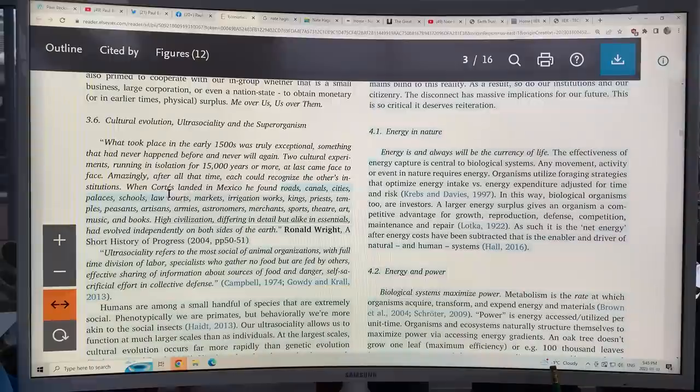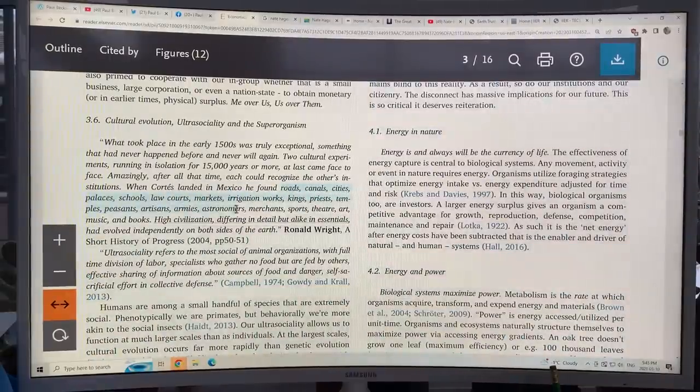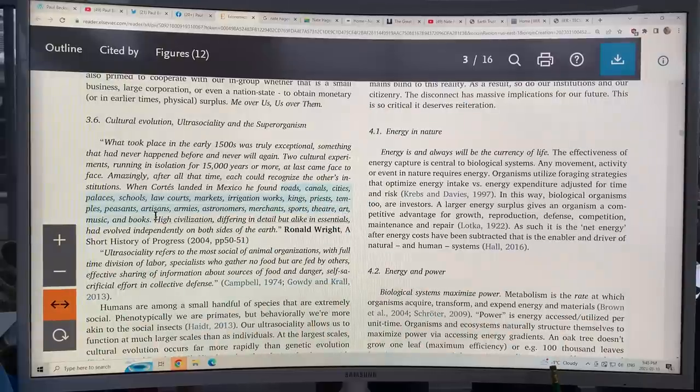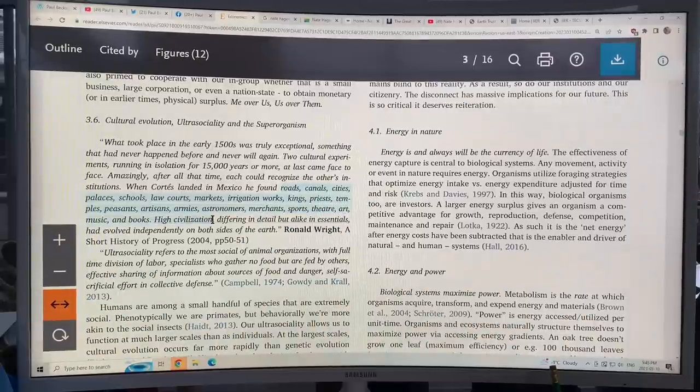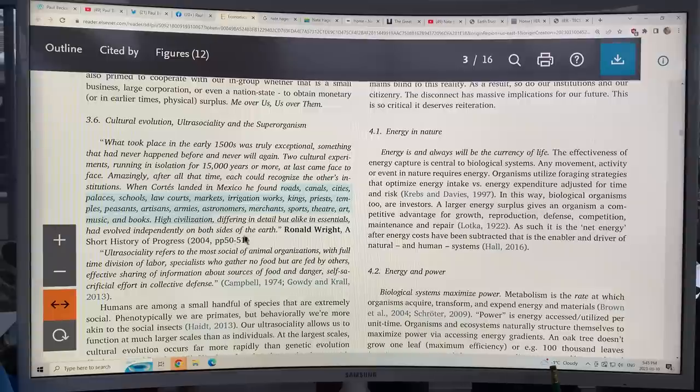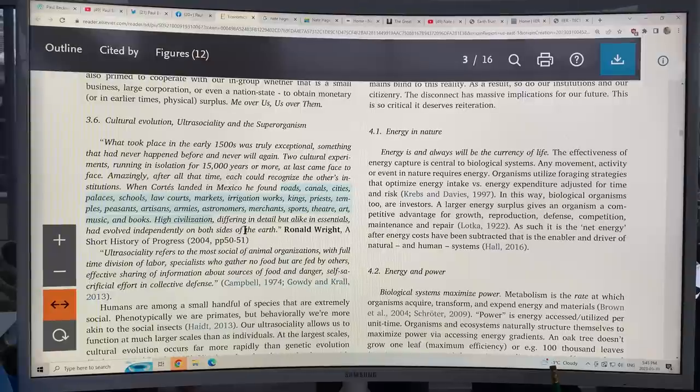He found roads, canals, cities, palaces, schools, law courts, markets, irrigation works, kings, priests, temples, peasants, artisans, armies, astronomers, merchants, sports, theater, art, music, and books. High civilization. So differing, it differs in detail, but it was alike in essentials, had evolved independently on both sides of the earth. Mexico versus Europe, Spain for the case of Cortez. So basically, the Europeans on one side, Mexico, South America, two different civilizations evolved completely, and then we know what happened. The one was conquered by the other.